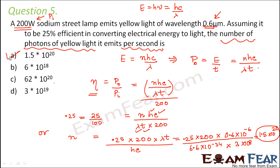So how did we approach this question? We saw what is given in the problem — efficiency was given and input power was given. We used that to calculate the output power. Once you do that, you will see that everything else is given to you and only one unknown variable is left. So you just calculate the value of that variable.